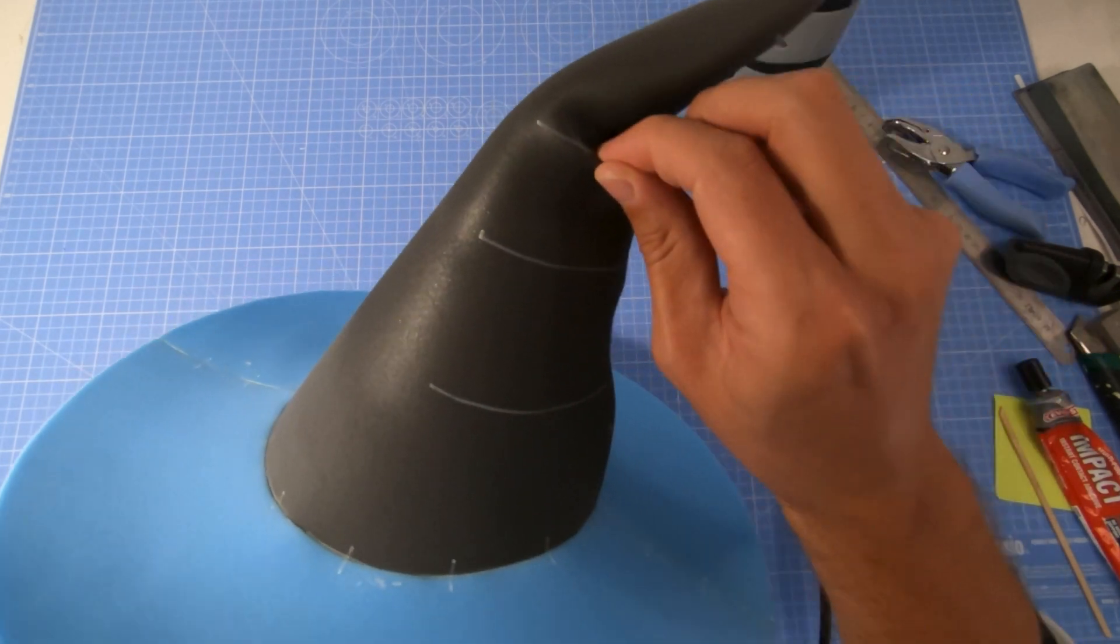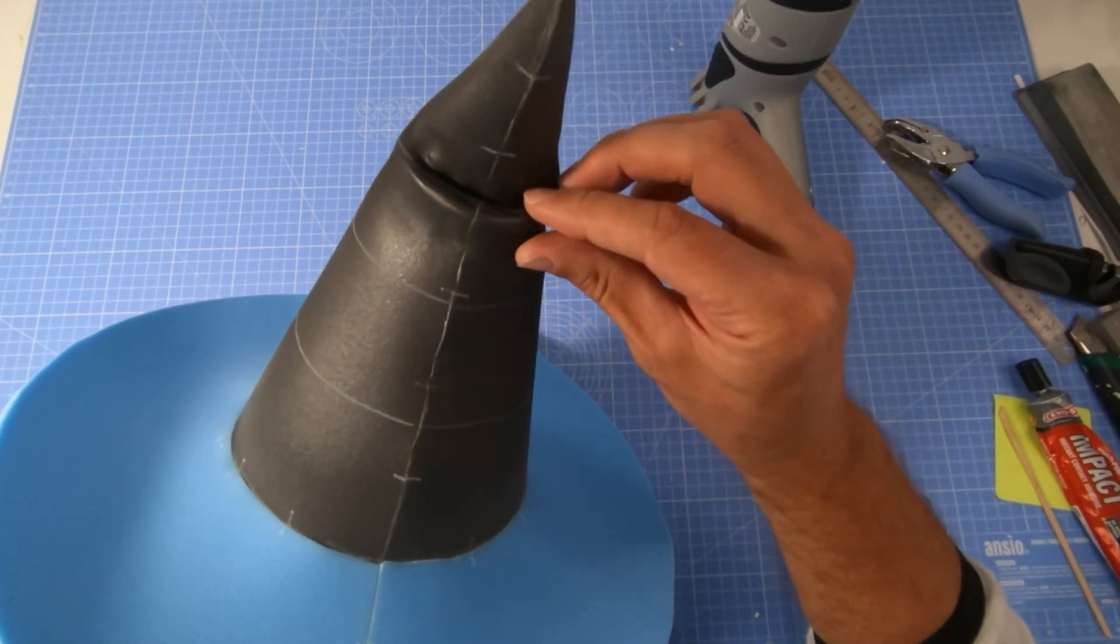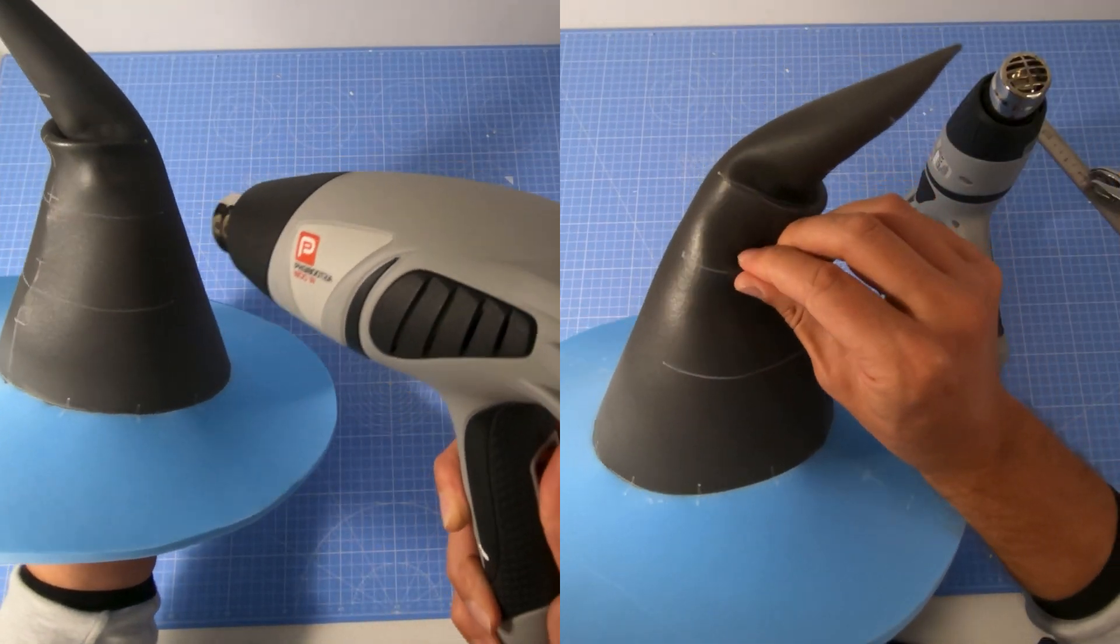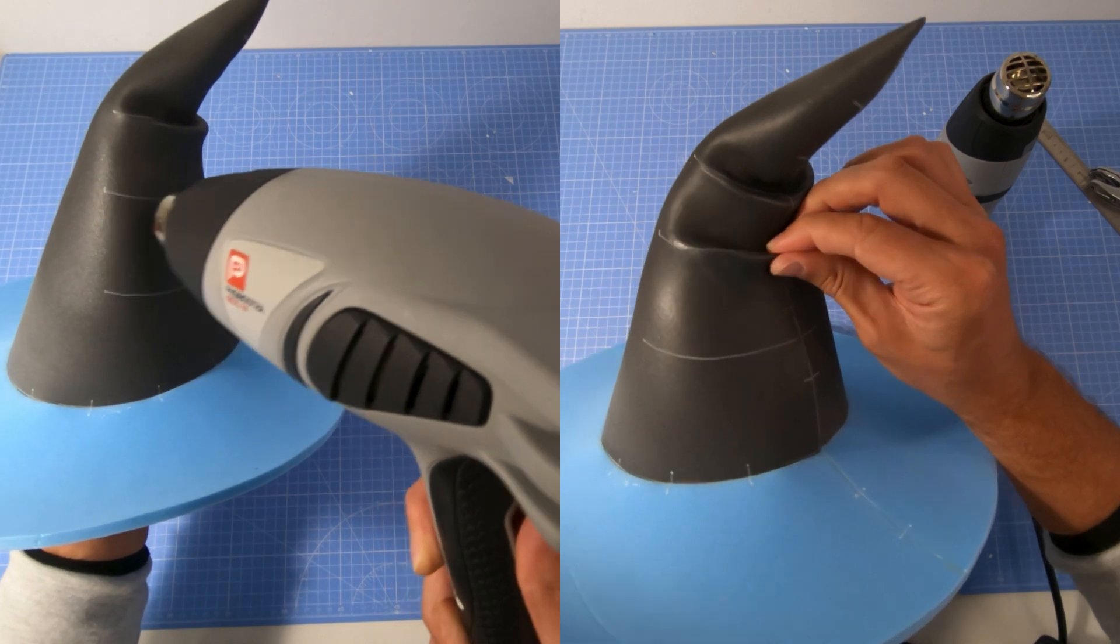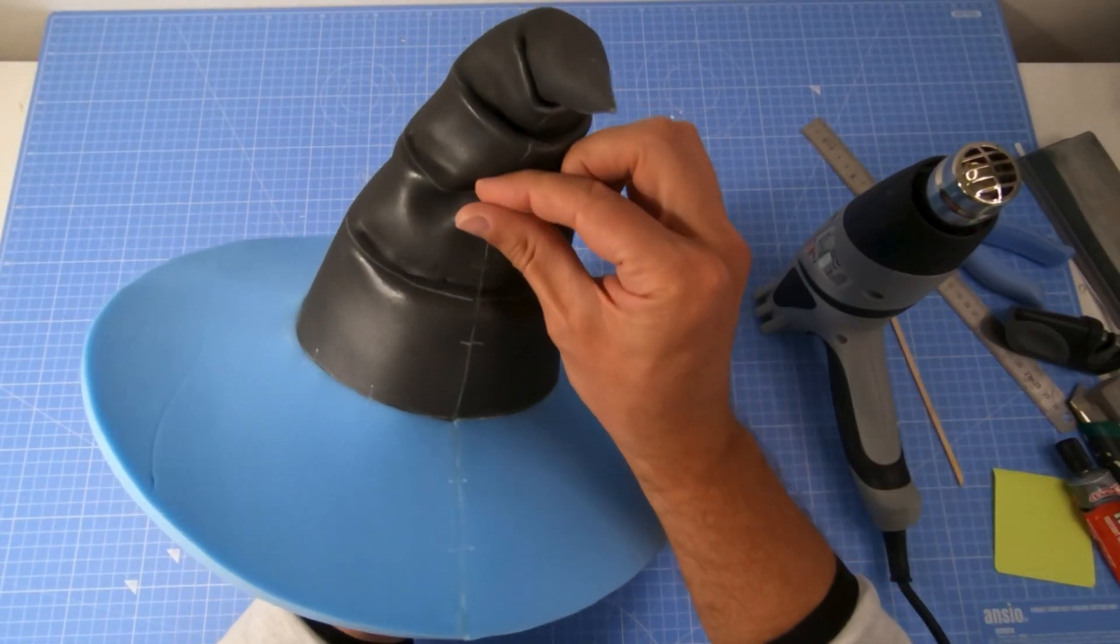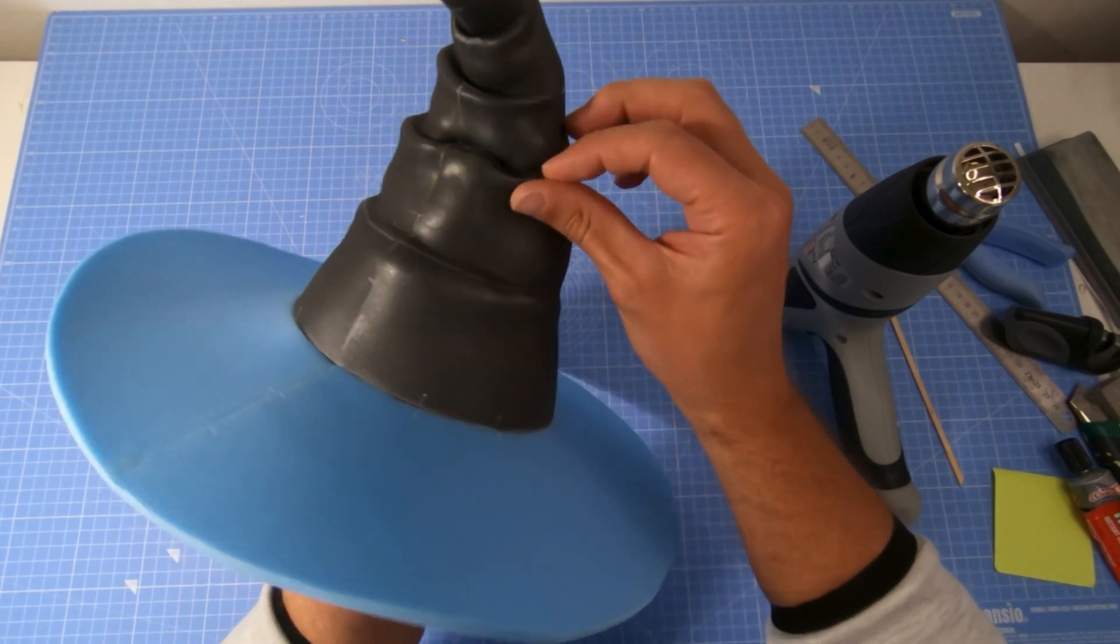Heat up the foam, start pinching and folding along the lines and see the magic happening. Do one fold first and then move up and down and add as many folds as you want. One last pass with the heat gun to give it a final look and also to seal the foam surface.